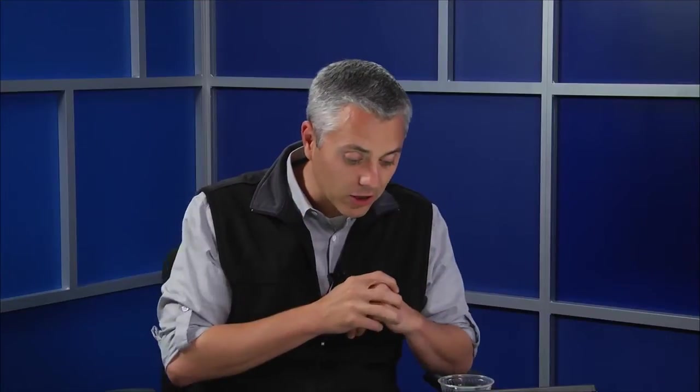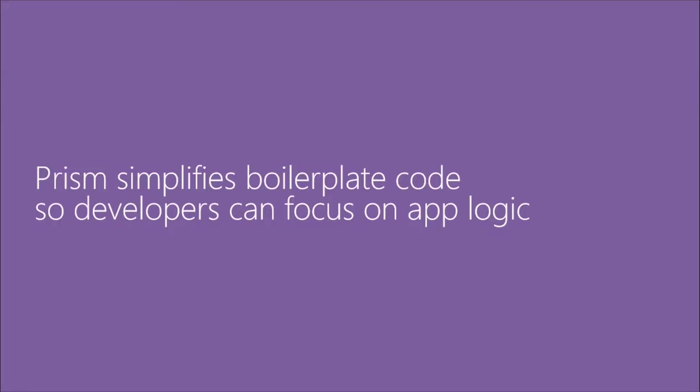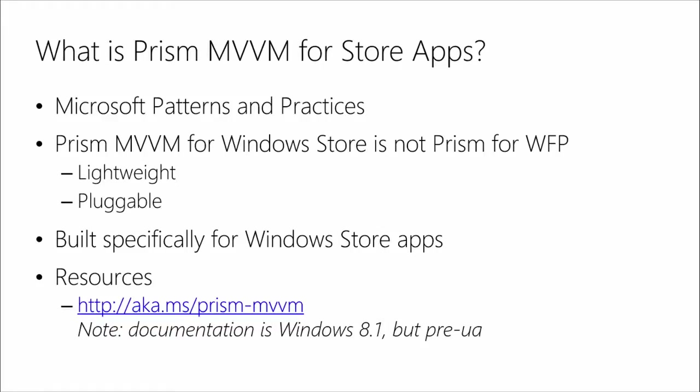Here's a URL for you: aka.ms/Prism-MVVM. This will get you started at the main page that drives you to all the other resources. A quick note: the documentation is specific to the 8.1 version of Prism, which targets the Windows Runtime only. The version we're using is the one for universal apps, and there have been some modifications.